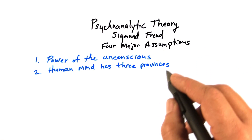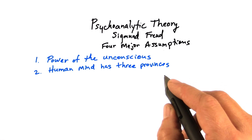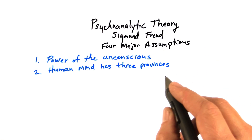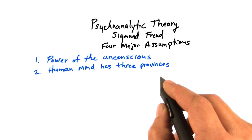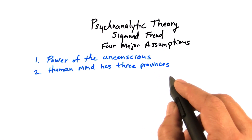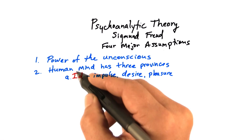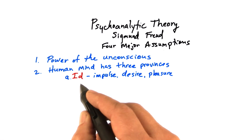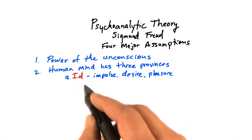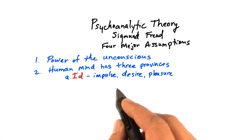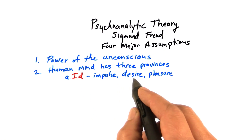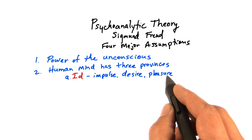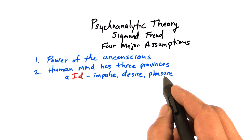The second major assumption Sigmund Freud made was that the human mind has three provinces. The first province is what Freud called the id — the seat of our impulses, our desires, pleasure-oriented. It's all about want.